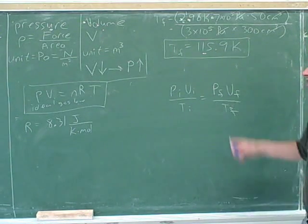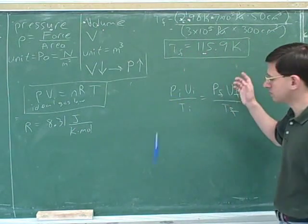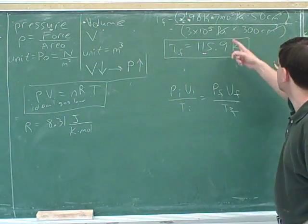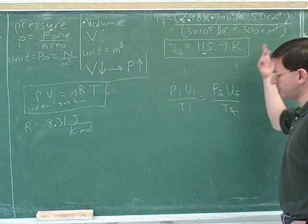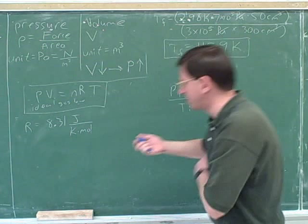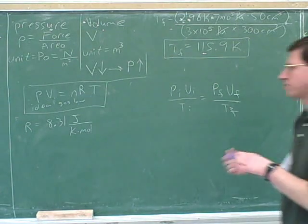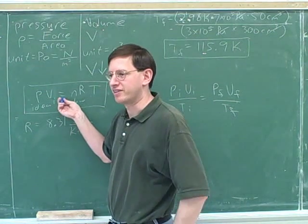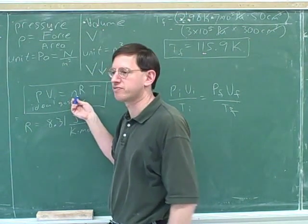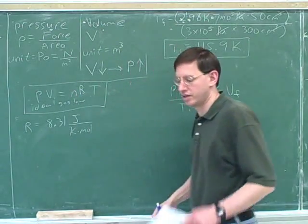That's why, since we're not using R, we don't need to be using units that are consistent with R. That's why it was okay here to use, whoops, use centimeters and, well, to use centimeters here. And it would also be okay to use atmospheres, as long as we were using atmospheres for the other pressure as well. But if you're doing a one-situation problem, you would do that just by plugging into this formula, right? For a one-situation problem, you just plug into this formula, and then you would be using R. So then you have to use units that are consistent with R.